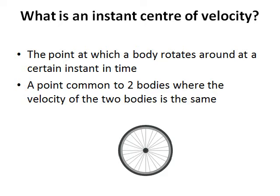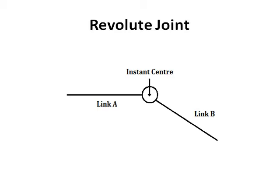The instant center does not have to be within any of the bodies. For example, a revolute joint connects two different bodies together. At the center of the revolute joint, the two links move with the same velocity. This point is an instant center.